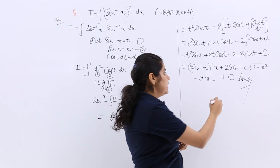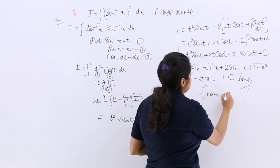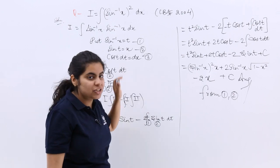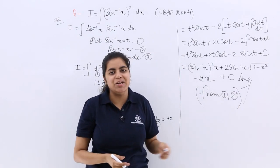So minus 2x plus C, and that is your answer to this question. But you have to use the equations—whatever equations you used, you have to write. So you have been using equation number 1, equation number 2. So I write here: from 1 and 2.